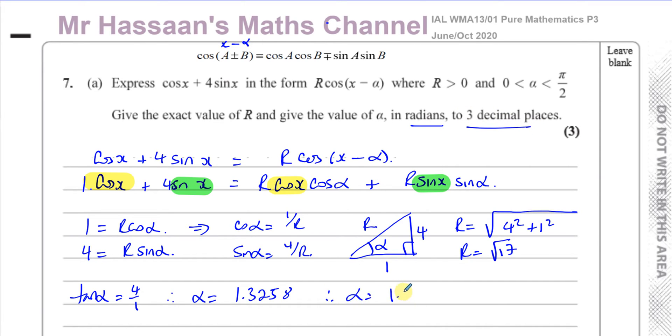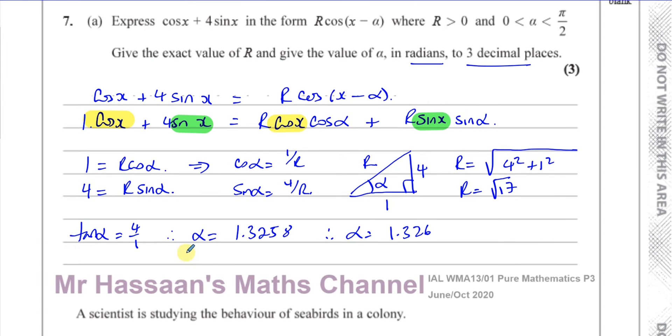Now they want this to three decimal places, so I can say alpha is 1.326, that's in radians. So now I can say that the cosine of x plus four times the sine of x is identical to r, which is root 17, cosine of x minus 1.326. There's the answer to part A.